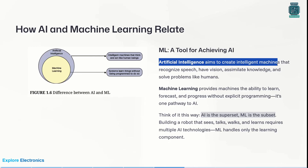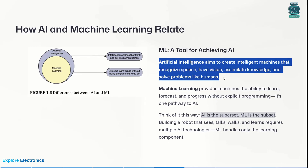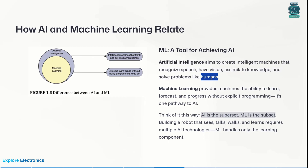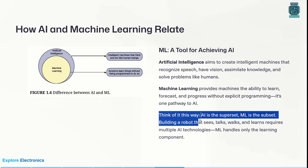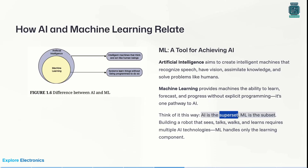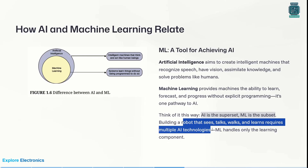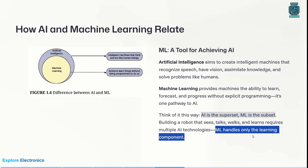Artificial intelligence aims to create intelligent machines that recognize speech, vision, and have knowledge to solve problems like humans. By utilizing machine learning — which has the ability to learn and forecast things without explicit programming — AI achieves this. We can think of it this way: AI is a superset, and ML is a subset of that. Building robots that see, talk, and learn requires multiple AI technologies; ML handles only the learning component.